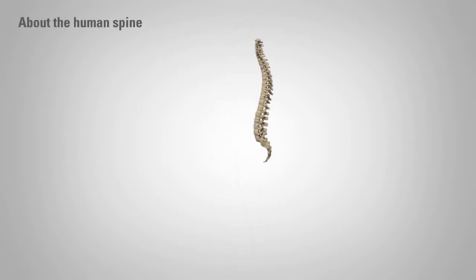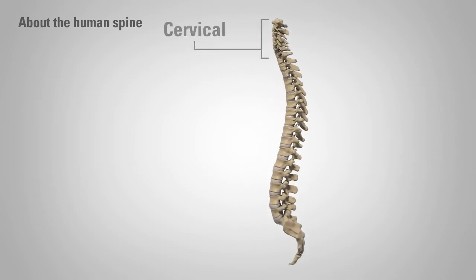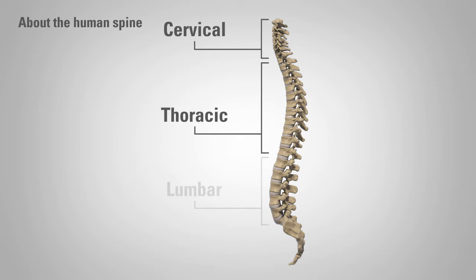The human spine is comprised of the cervical spine, or neck, the thoracic spine, or chest, and the lumbar spine, or lower back. There are 24 vertebrae in the spine.